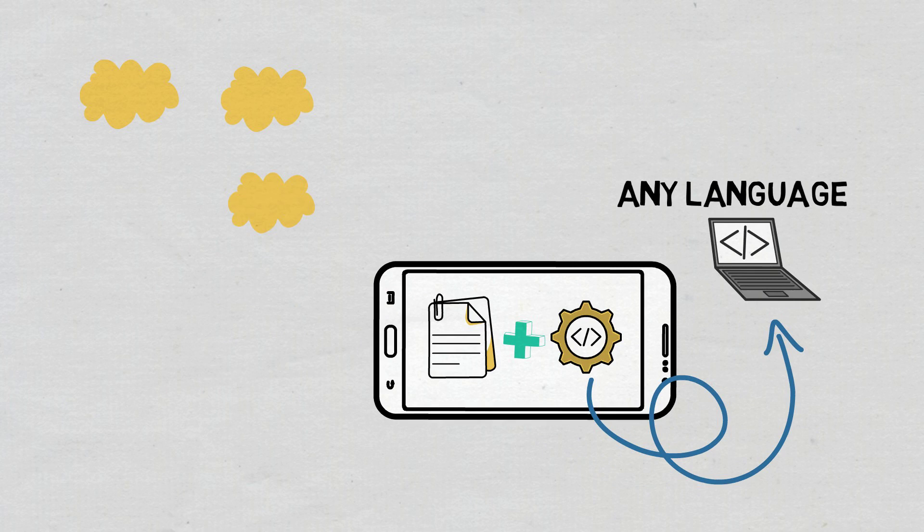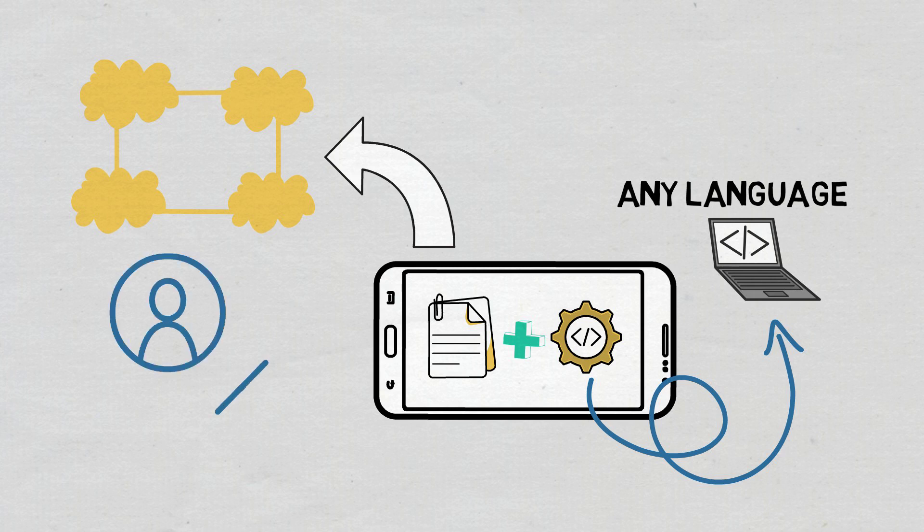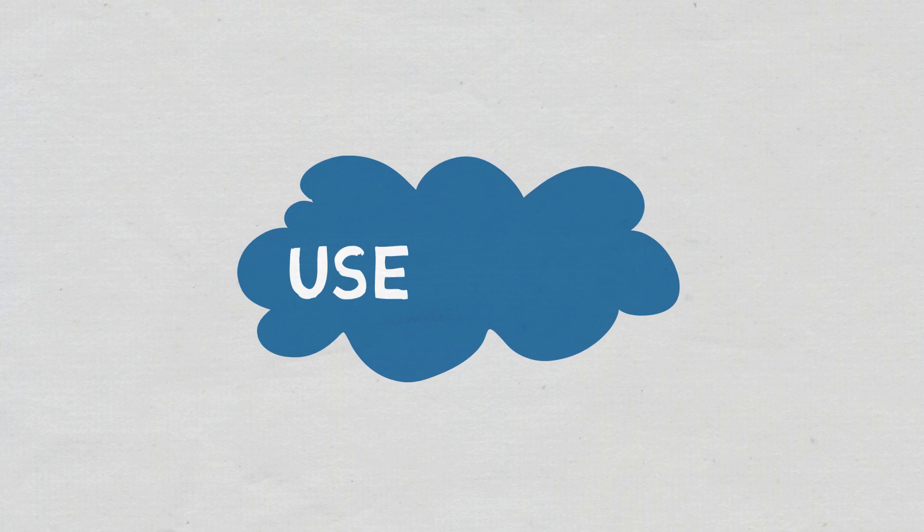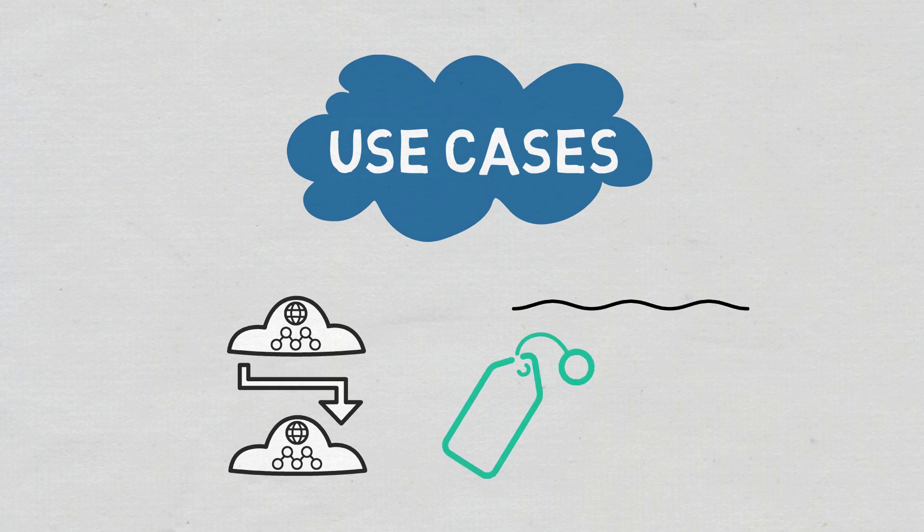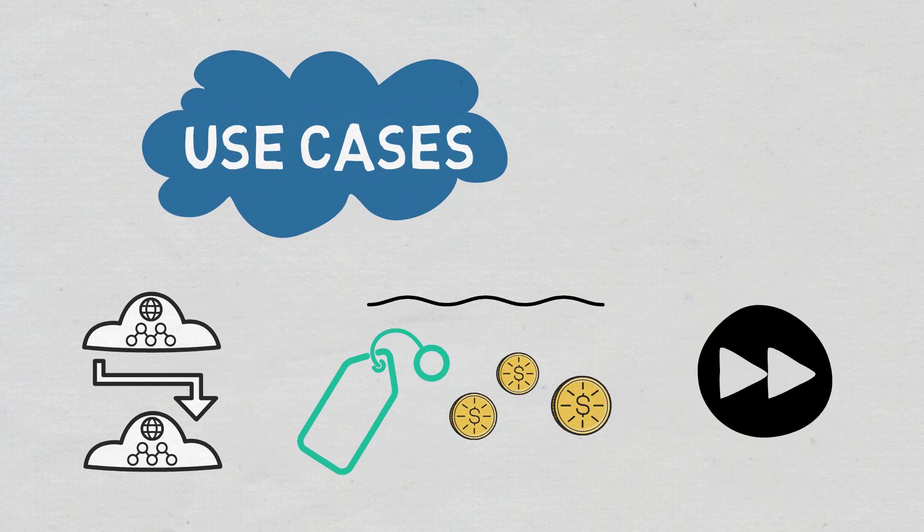DApps can be decentralized because they are controlled by the logic that has been written into the smart contract and not by a company or individual. Regarding their use cases, dApps run everything from DeFi lending platforms to marketplaces, as we will see later in this video.